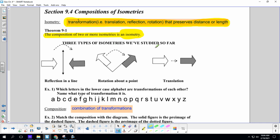The three types of isometries we've studied so far are reflections in a line like a mirror, rotation about a point, we did that last lesson, and a translation where we just scoot it over.